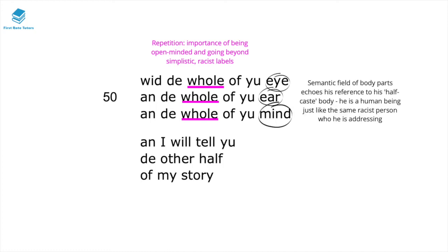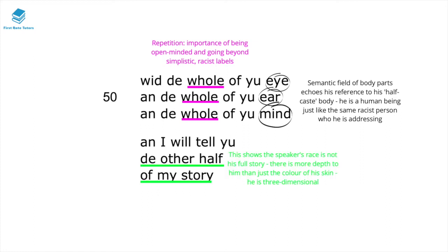The semantic field of body parts, where the speaker is addressing the racist person, actually echoes their reference to his half-caste body. This shows he recognises that the racist person is just the same human being as he is — the person who has had a racial slur used against him still sees the racist person as a human being and is willing to educate him. He states 'I will tell you the other half of my story' — the speaker's race is not his full story. There's more depth to him than just the colour of his skin. He is three-dimensional.